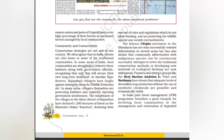Attempts to revive traditional conservation methods or developing new methods of ecological farming are now widespread. Farmers and citizen groups like the Beej Bachao Andolan in Tehri and Navdanya have shown that adequate levels of diversified crop production without the use of synthetic chemicals are possible and economically viable.